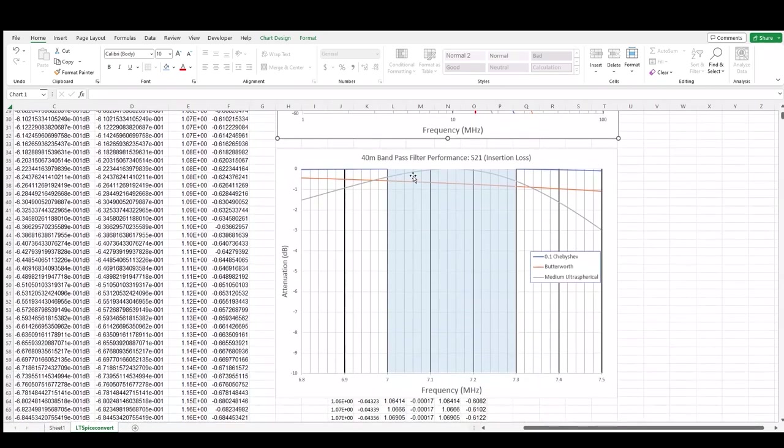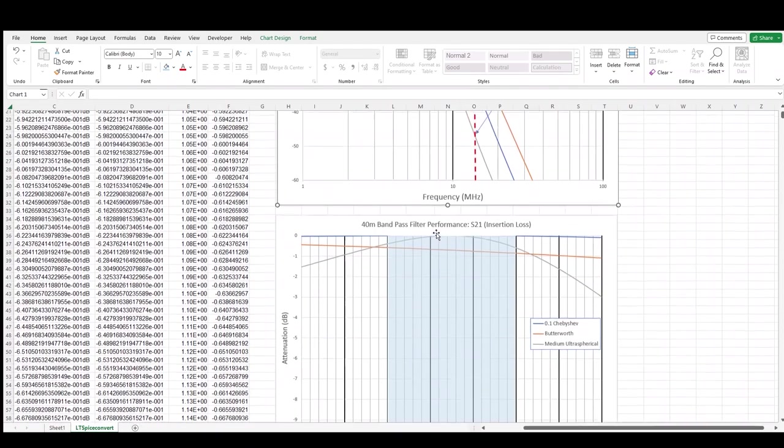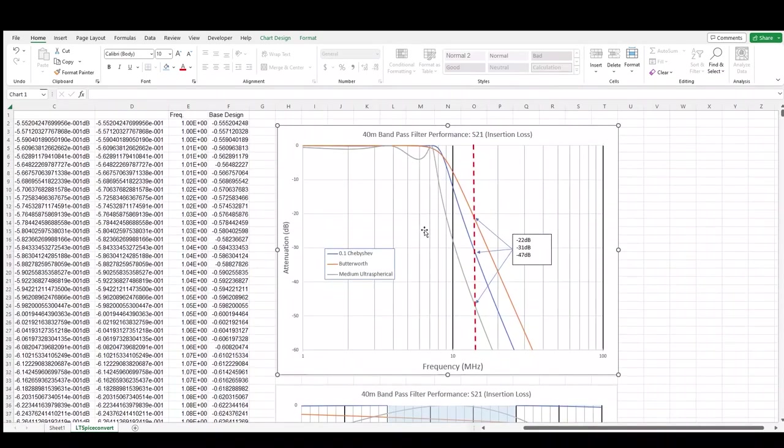Now there's an important caveat here. These results are using target values for the caps and inductors. Actual real-world values, along with component tolerance and drift over temperature, will have an impact, possibly even shifting that local minima outside the 40m band and causing the insertion losses to increase. So I might need to do some fine-tuning of the caps and inductors to keep that local minima in band.